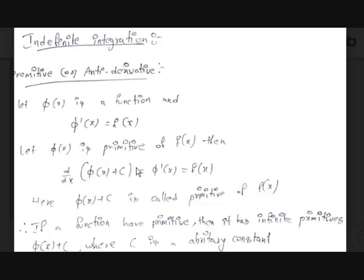If φ(x) is the primitive of f(x), then d/dx of [φ(x) + c] is also φ'(x), which is f(x). So φ(x) + c, where c is an arbitrary constant, is also a primitive of f(x). This means for a function f(x), there are infinitely many primitives, varying with the constant c.